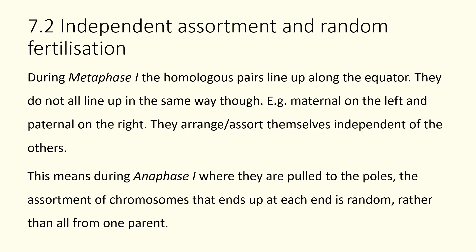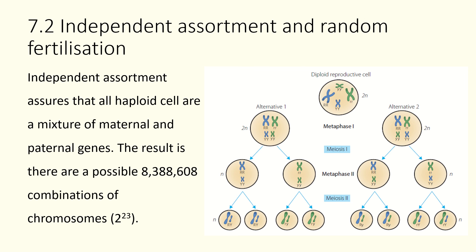Because the chromosomes assort independently, we don't end up with all maternal chromosomes on one side and all paternal on the other. During anaphase one, the assortment of chromosomes pulled to each pole is totally random, giving a mix of maternal and paternal DNA in each gamete. The total number of possible combinations from independent assortment alone is 2 to the power of 23, which equals 8,388,608.